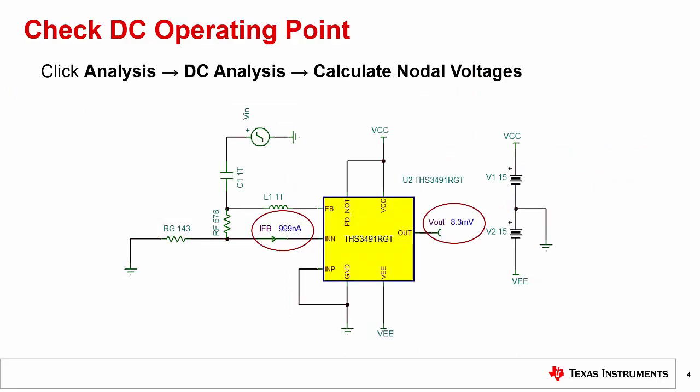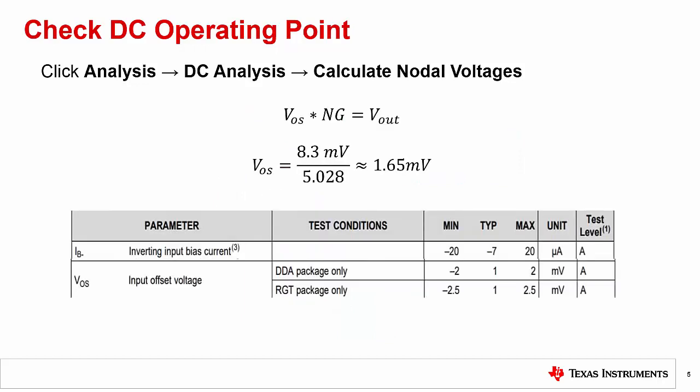The first step in obtaining our open loop curves is to check the DC operating point of the circuit to confirm the amplifier is properly biased. This can be done by clicking Analysis, DC Analysis, and Calculate Nodal Voltages. In this case, we can see the bias current is around 1 microamp and our output voltage is 8.3 millivolts. The output voltage is a reflection of the input offset voltage times our noise gain, giving us an input offset voltage of around 1.65 millivolts. Comparing both DC values with the respective ranges in the datasheet, we can see that both the simulated input bias current and input offset voltage meet the specifications of the THS3491.